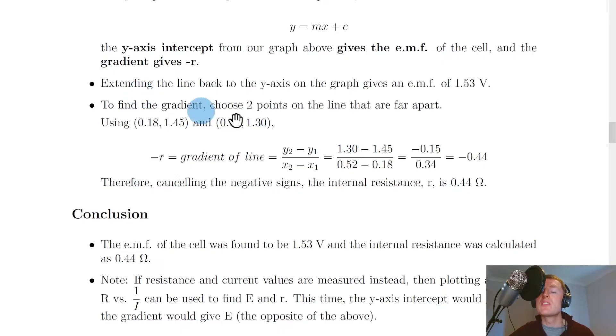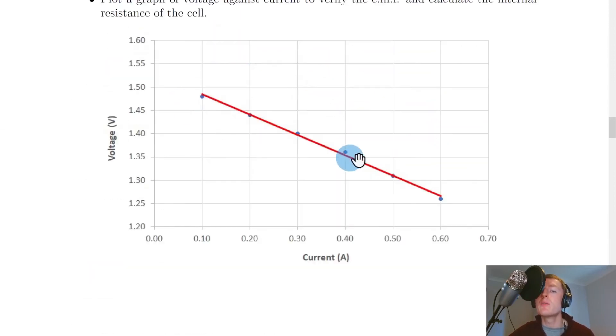So what we can do then is to find the y-axis intercept from our graph we can extend the line backwards to the y-axis on the graph and this gives an emf in this example of around 1.53 volts. So let's just see that in the graph. So if I was to take a ruler here and extend this line backwards you'll see that it cuts the y-axis at roughly 1.53 volts. So that means my emf here is about 1.53 volts.